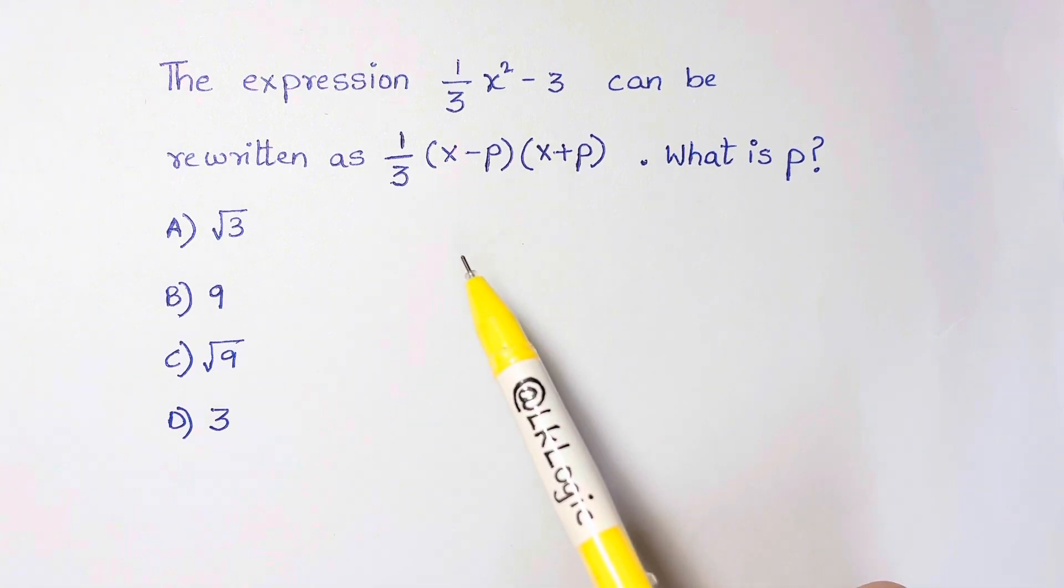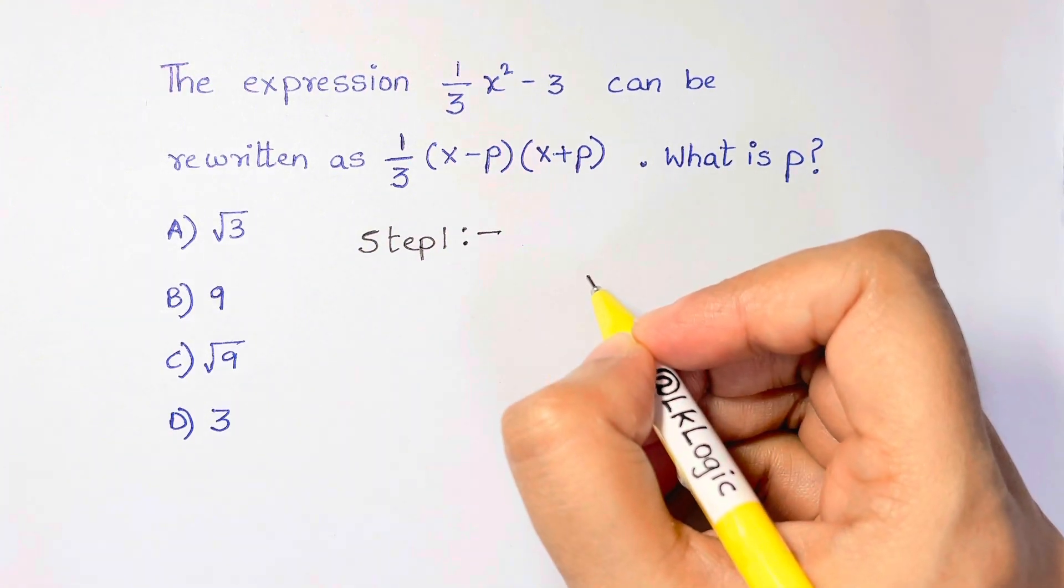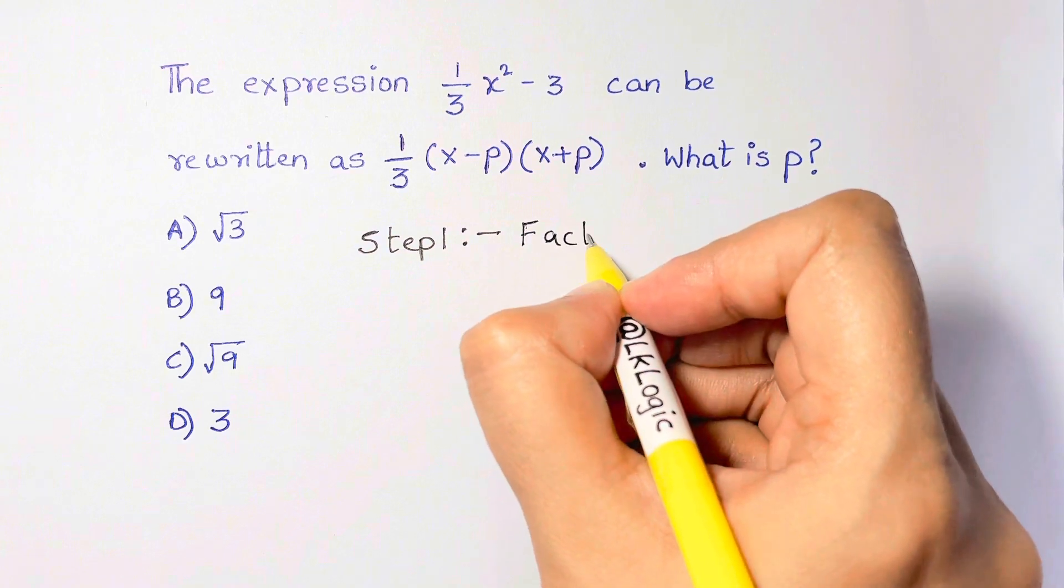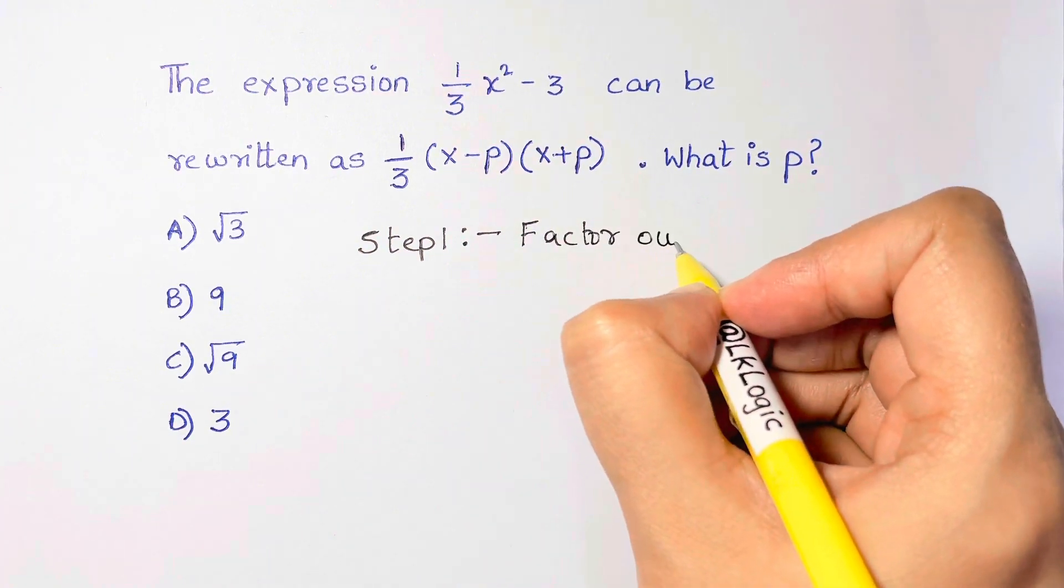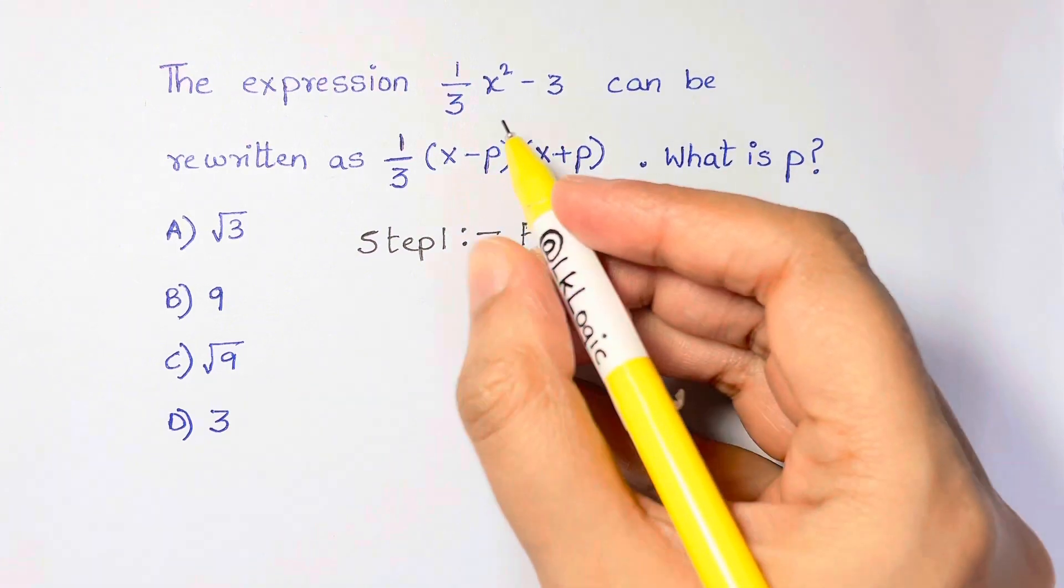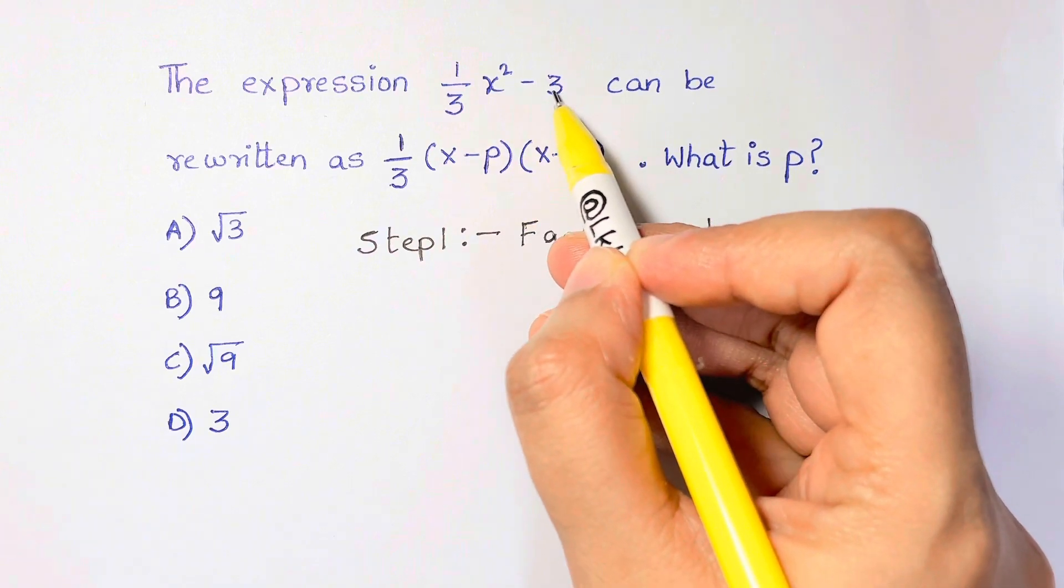For step one, I'm going to try to factor out 1/3. As you can see here, 1/3 is only multiplied to x² and not multiplied to 3, so we're going to think of 3 in a creative way.